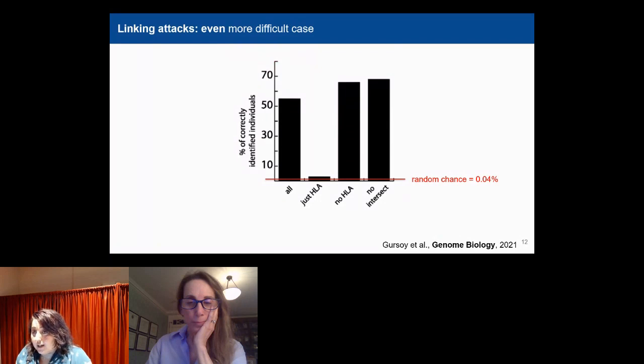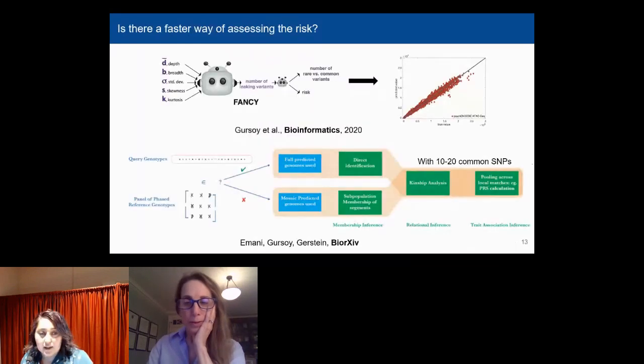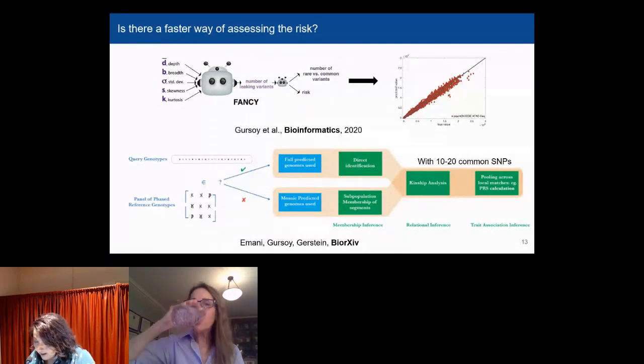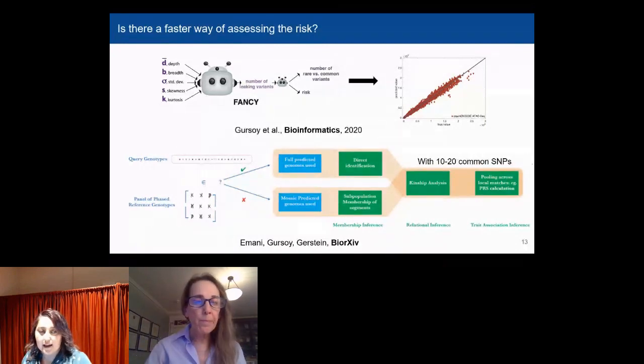Linking attacks are great. You get a lot of information about what kind of leakage there is in the data, but it's really long and computationally cumbersome. We decided that maybe we can create tools that will assess the risk of re-identification very fast. For that, we developed a supervised Gaussian process learning model that takes the sequencing properties of the functional genomics data and outputs how many variants you would expect from the data, pretty accurately. Later, my colleague Prashant also developed his hidden Markov model-based model where with 10 to 20 common SNPs, he can tell a variety of risk measurements about these individuals.